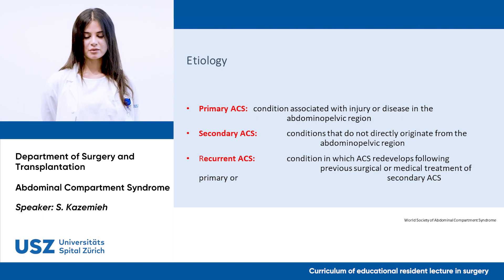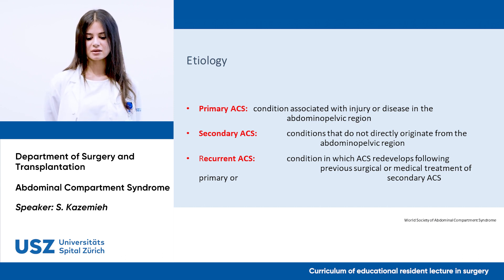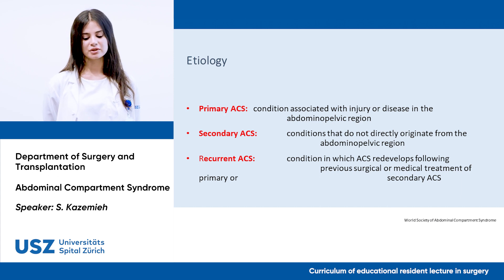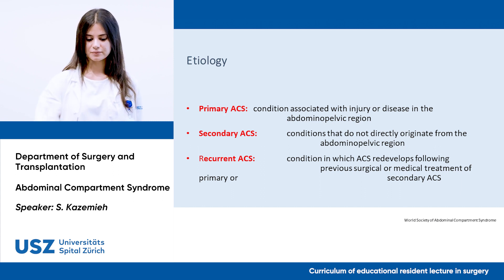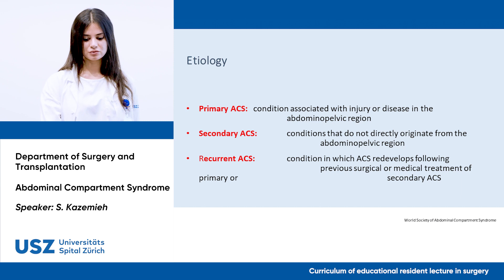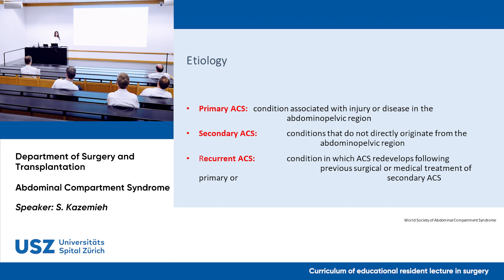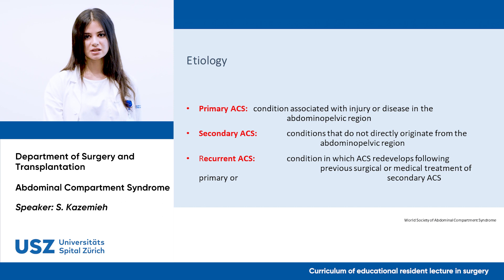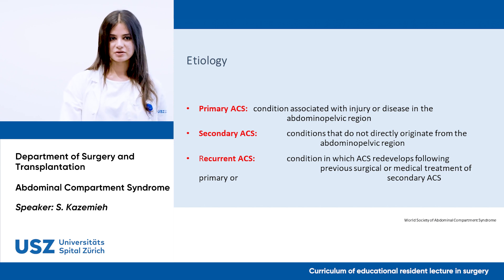Regarding etiology: primary ACS involves conditions originating from the abdominal-pelvic region — for example trauma, hemorrhage, massive bleeding, or ileus from dilated loops. Secondary ACS does not directly originate from the abdominal-pelvic region, for example burns or massive fluid resuscitation over three liters. Recurrent ACS is when ACS redevelops following previous surgical or medical treatment of primary or secondary ACS.